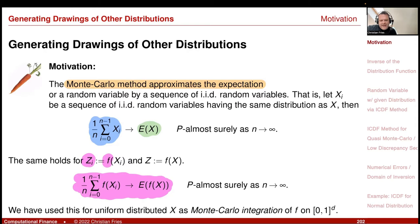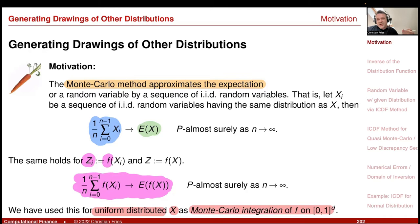We used this result in a special case where X is uniformly distributed. So we had an integral over zero to one on the right-hand side, which constituted our Monte Carlo integration. We already studied applications where we integrated over different domains, using the rule of substitution to transform the integral from the domain of interest to the domain zero-one.